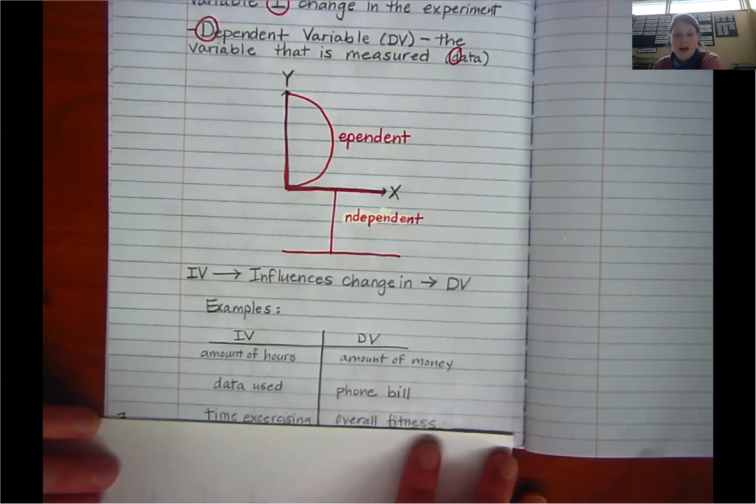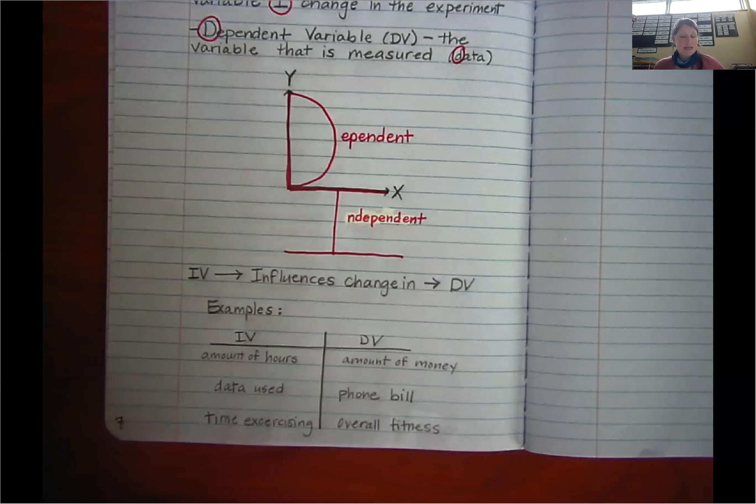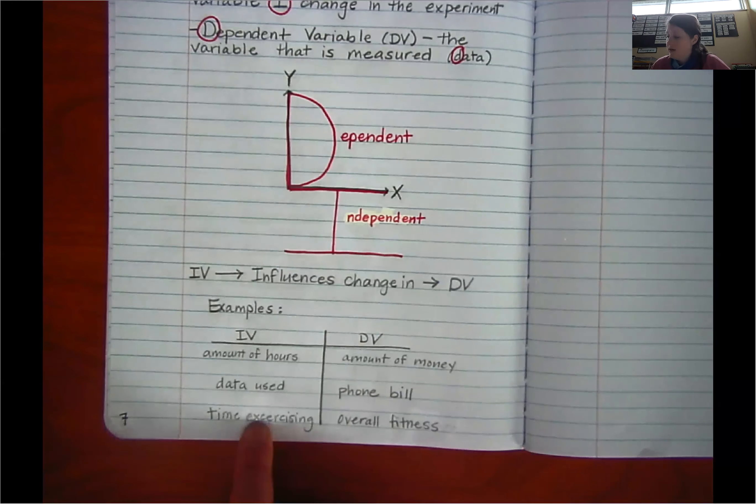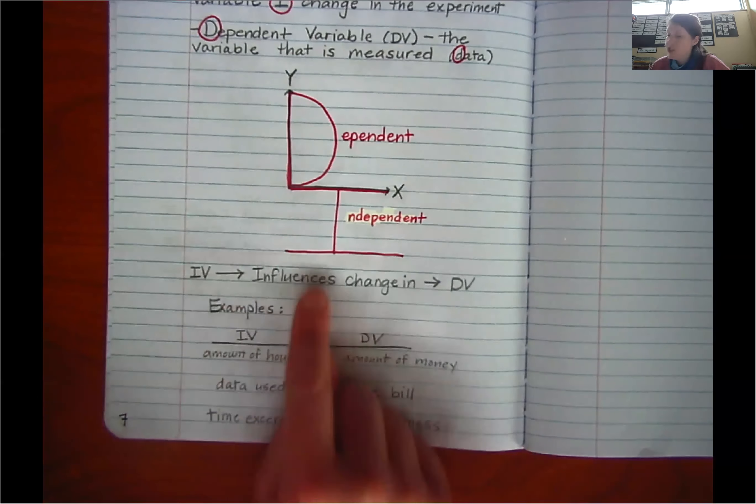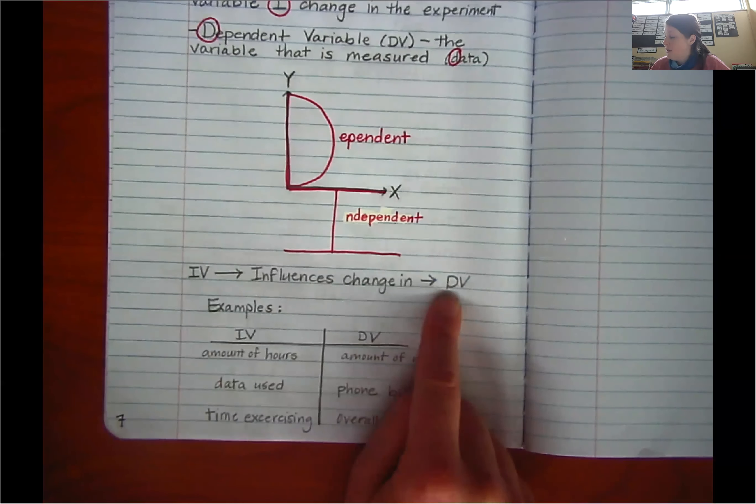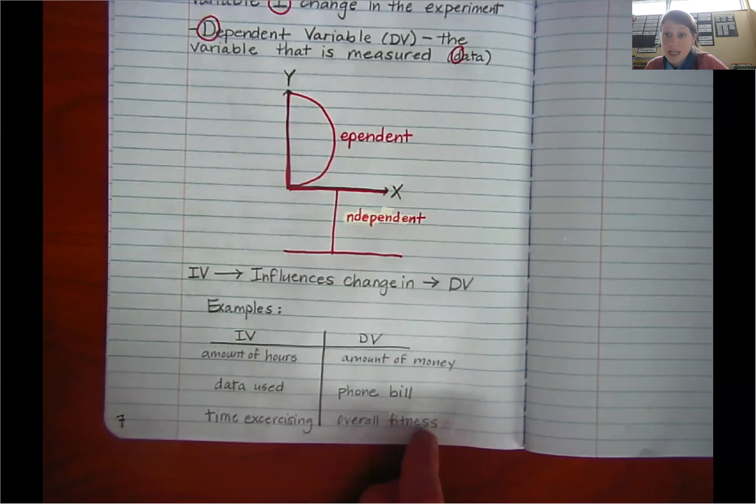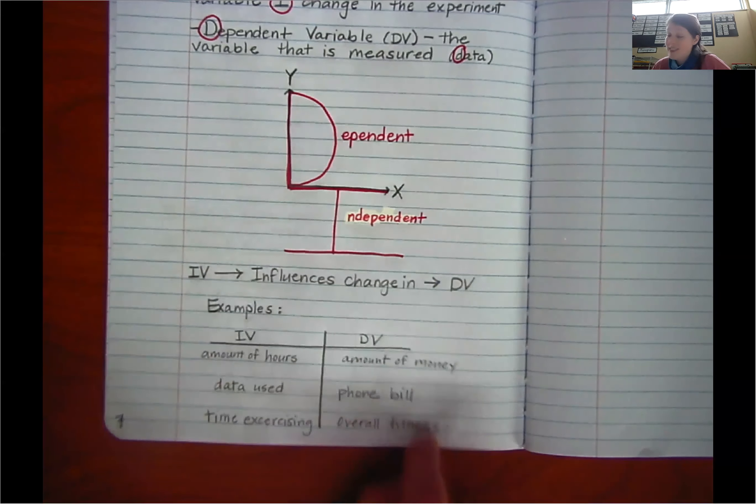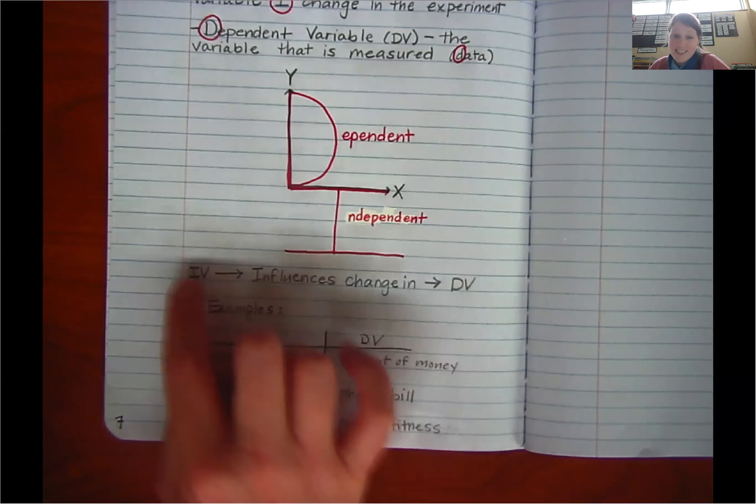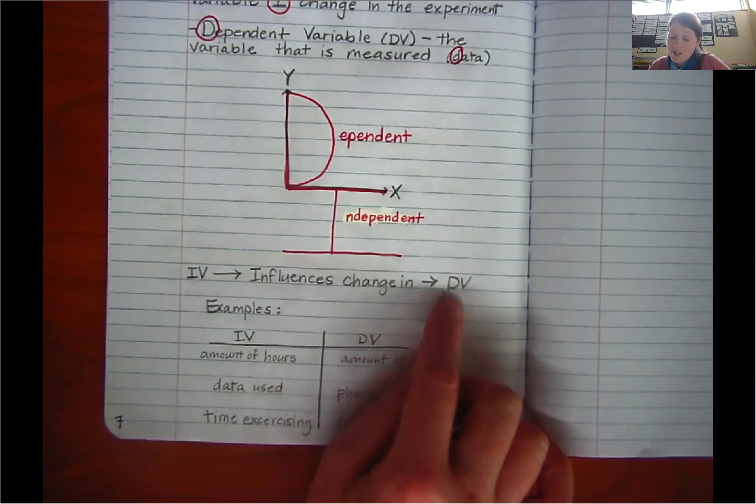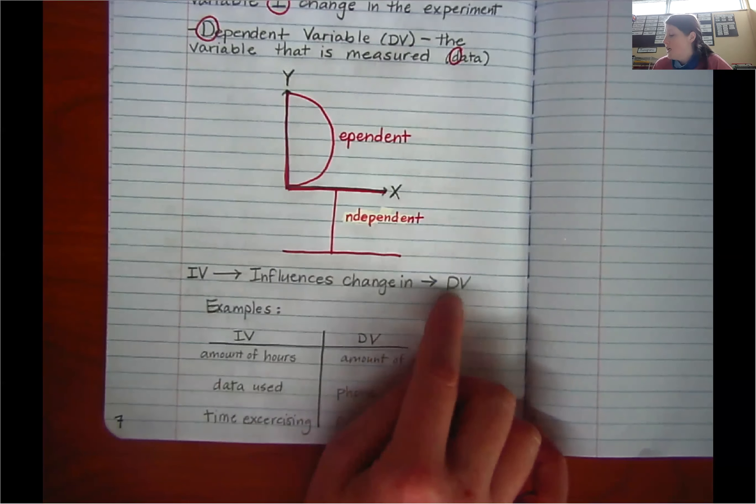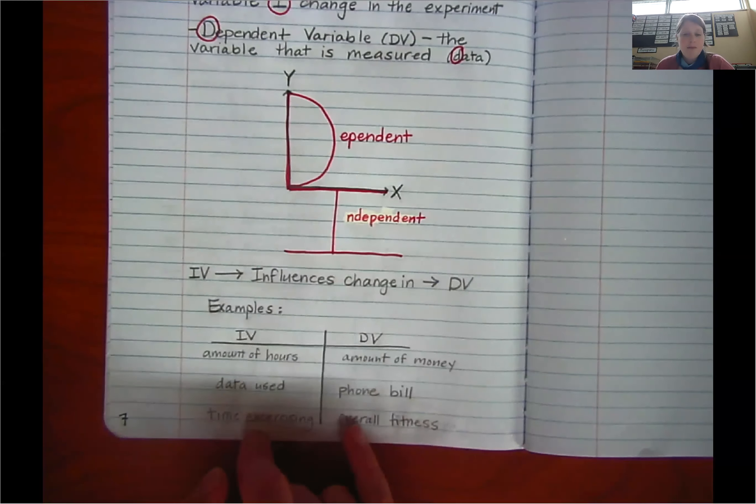The last one I have is, does the time I spent exercising, independent variable, influence change in my dependent variable, my overall fitness? I would like to think so. But it's definitely not, does my overall fitness influence change in time I exercise? No, that doesn't make sense. So that's just sort of how you can remember it.